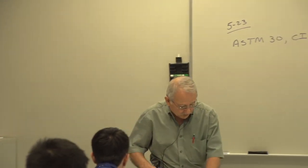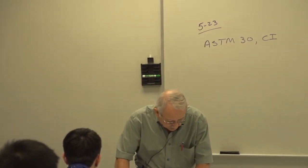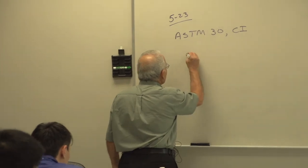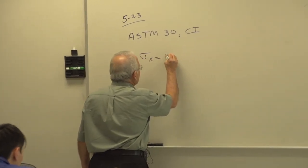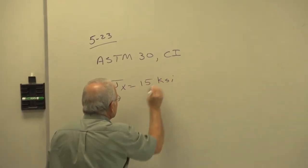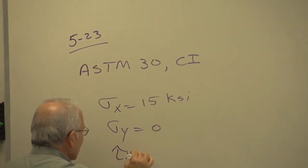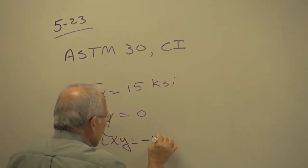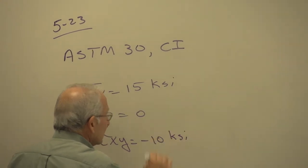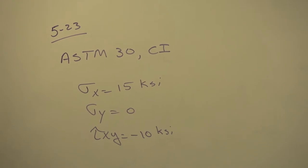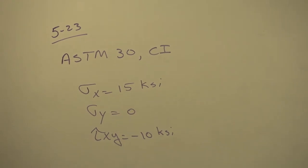This problem — and this is general for a number of problems — will have the following stresses: sigma X equals 15 KSI, sigma Y is 0, and tau XY is minus 10 KSI. This, of course, is given as the state of stress at a point.